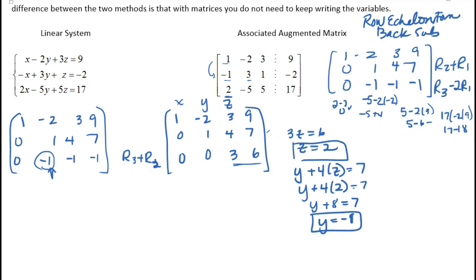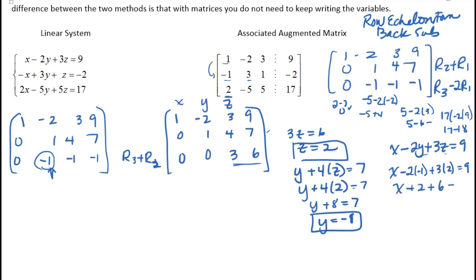Now I know z and y, so I back substitute into the first equation: x minus 2y plus 3z equals 9. That's x minus 2 times negative 1 plus 3 times 2 equals 9, so x plus 2 plus 6 equals 9, giving x plus 8 equals 9, so x equals 1. Written as a point: (1, negative 1, 2).